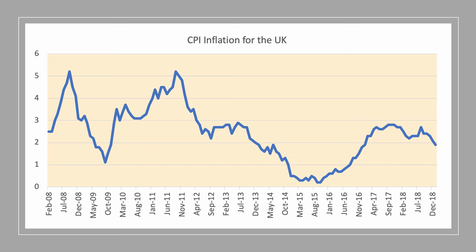The CPI — the Consumer Prices Index — is the main measure of inflation and it's the measure used for the Bank of England's inflation target of 2%. Notice in 2015 the main fear was of deflation, but those deflation fears dissipated into 2016. Indeed, the post-Brexit referendum depreciation of sterling helped cause an acceleration in inflation, in part because import prices go up when the exchange rate falls.